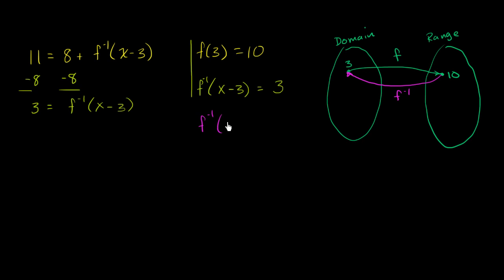Let me write that down. f inverse of 10 is equal to 3. So this thing right over here is the same thing as that thing right over here. So 10 must be equal to x minus 3. We could write x minus 3 is equal to 10. Add 3 to both sides. x is equal to 13.